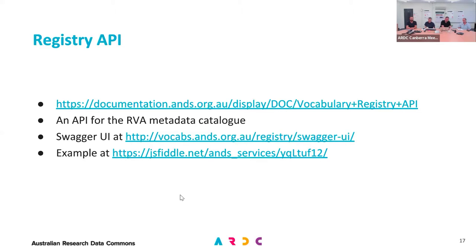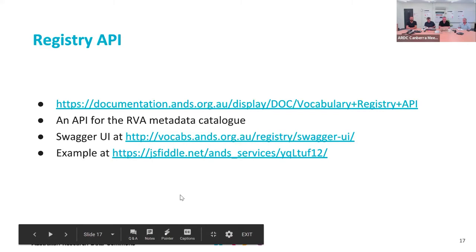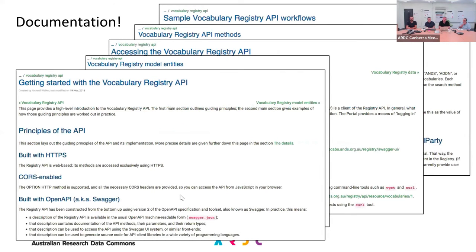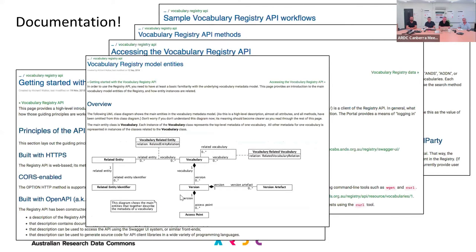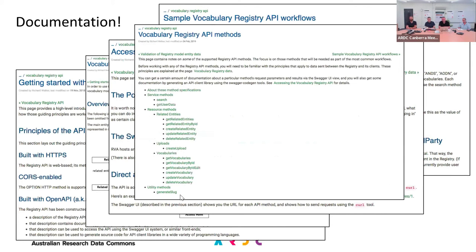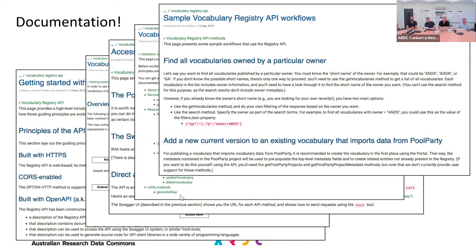The documentation will take you through what's available. In particular, I'll show you the Swagger user interface, which is a really nice, convenient way of just getting started with it. The presentation also has a link to a reasonably straightforward example of one way of using it, but there are many others. There are lots of documentation pages on our documentation site — a getting started high-level intro, description of the model entities, how you access it, different means of accessing the API, details of particular methods, and a page of sample workflows — just examples, like a cookbook to help you get started.